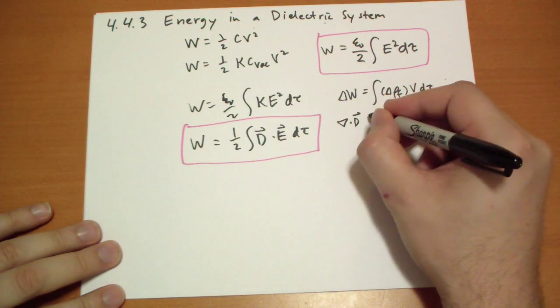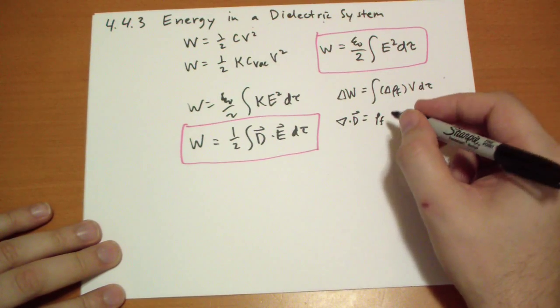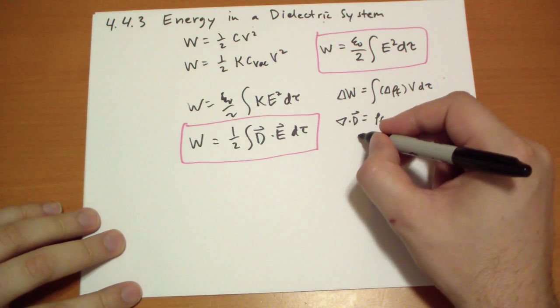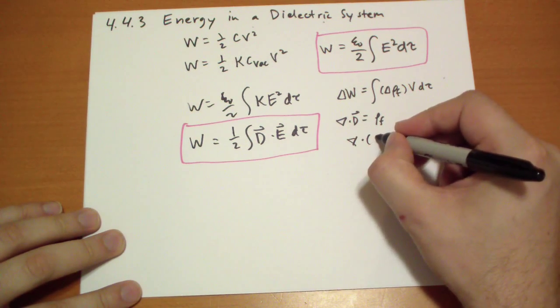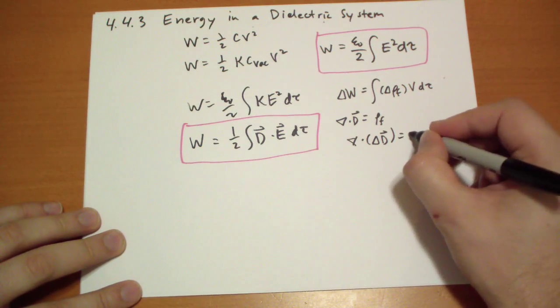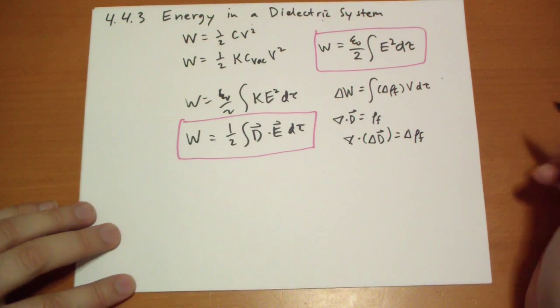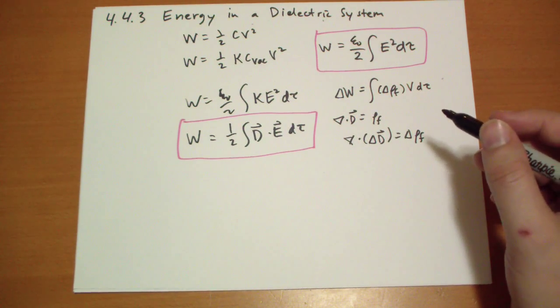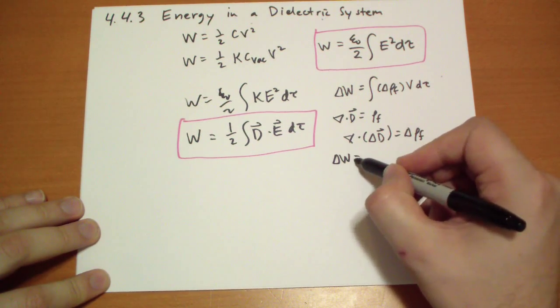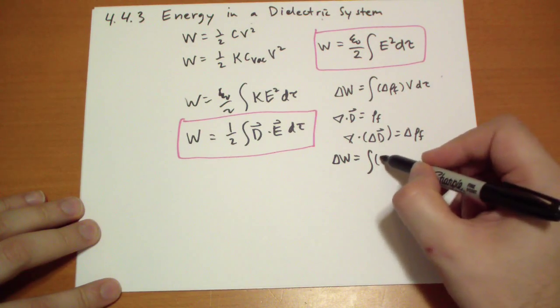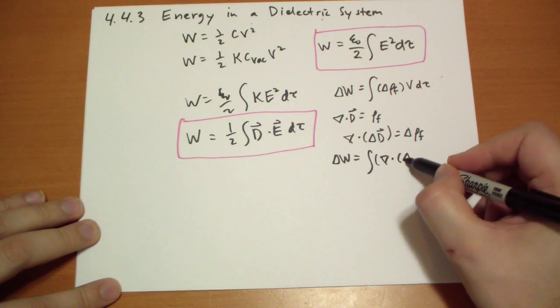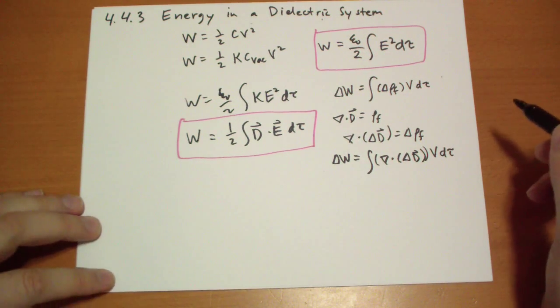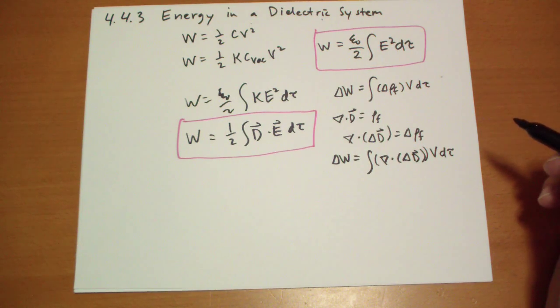So, the amount of work, the small amount of work it takes to move a small amount of free charge is basically this much. What's the potential at the point you're putting that at, and where is the charge going to? Well, the divergence of D is equal to the free charge. And so, the divergence of the small change in D will give you the small change in the free charge.